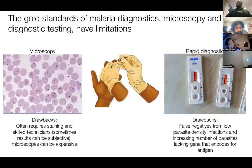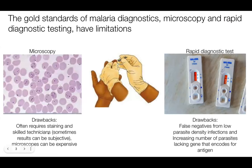In terms of diagnostics, the two gold standards of malaria diagnostics are microscopy and rapid tests. With microscopy, you have a finger prick and you create either a thick or thin smear. Oftentimes you'll stain that and look for infected red blood cells or the parasite itself. With the rapid diagnostic test, you take that prick of blood, put it through an immunoassay, and a positive red line indicates a positive test — this test is looking for antigens from the parasite itself.